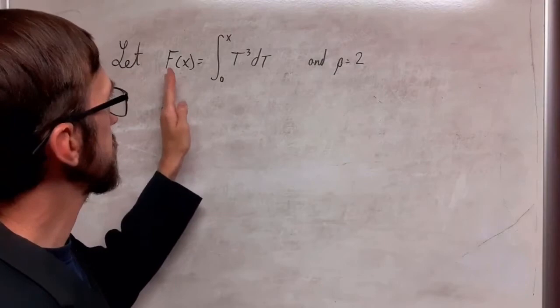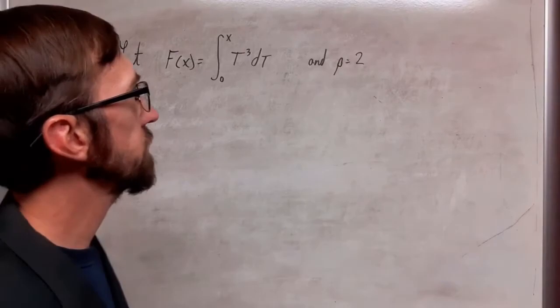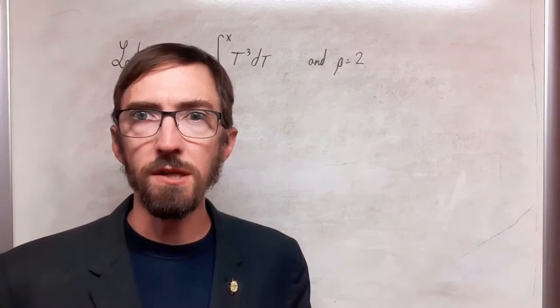That makes my big F of x to be the integration from 0 to x of t cubed dt, and then I'm going to choose my p value is 2, and then I just want to show that the inequality itself will work.